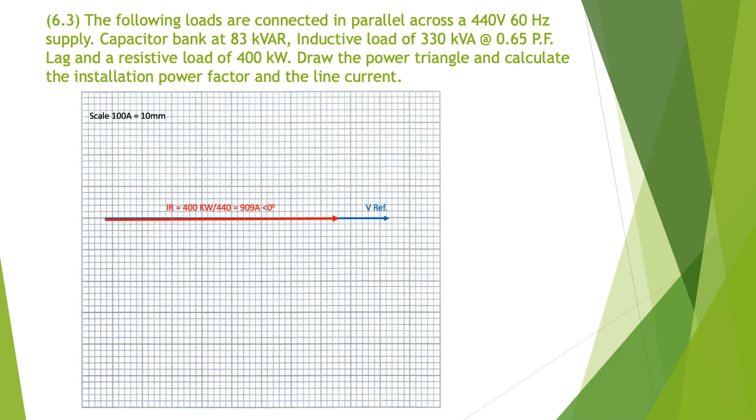So bottom of our power triangle we know that the wattage is in phase with the voltage so it's on the horizontal. We get IR equal to 400 kilowatts divided by 440, so we got 909 amps at zero degrees for our first current. For the resistive component that's the watts. Then we have a current so 83 kVA divided by 440 and that is going to give us 189 amps at 90 degrees.